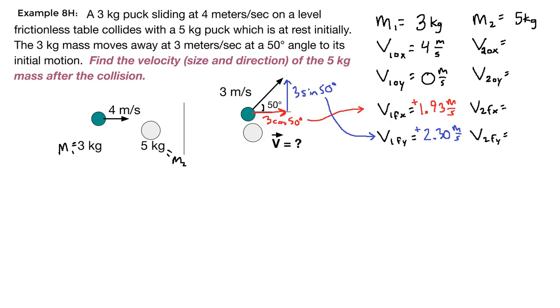If we go back to the 5 kilogram block, the 5 kilogram block is at rest initially. That means that its initial x velocity is 0, and its initial y velocity is 0. We are trying to find the overall velocity, which means we need to calculate the x component and the y component of that velocity and put them together in a final triangle.